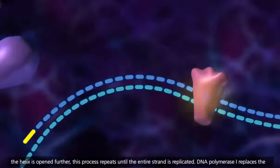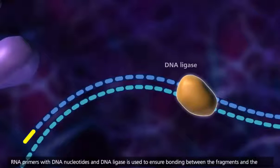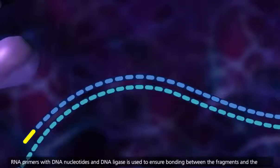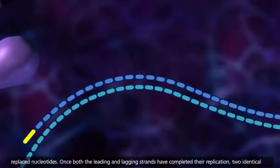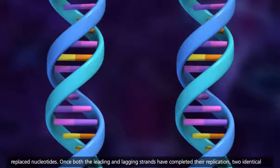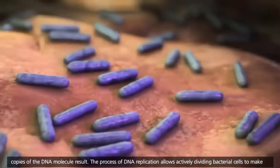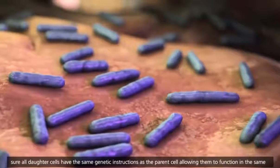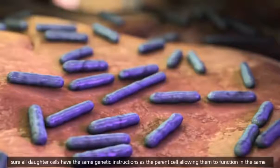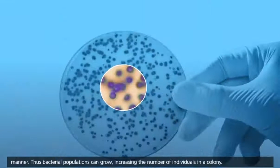DNA polymerase 1 replaces the RNA primers with DNA nucleotides, and DNA ligase is used to ensure bonding between the fragments and the replaced nucleotides. Once both the leading and lagging strands have completed their replication, two identical copies of the DNA molecule result. The process of DNA replication allows actively dividing bacterial cells to make sure all daughter cells have the same genetic instructions as the parent cell, allowing them to function in the same manner.